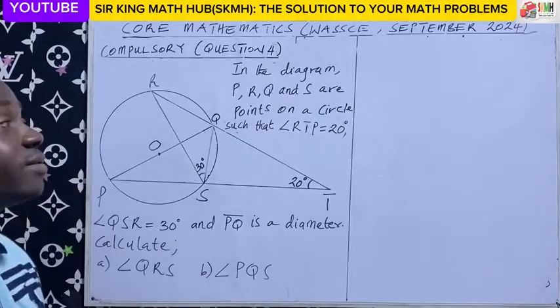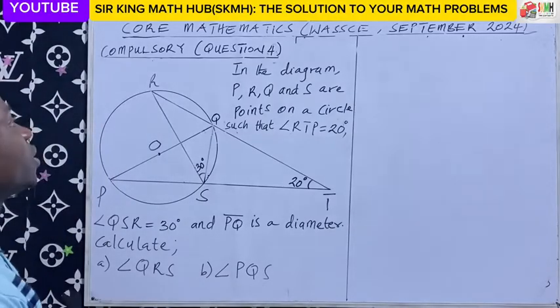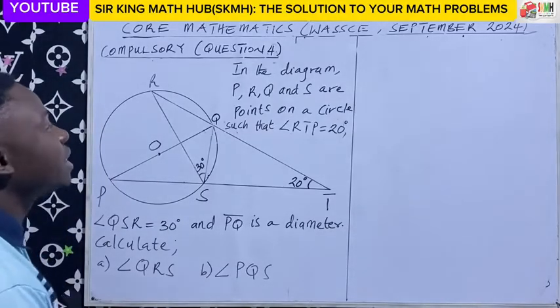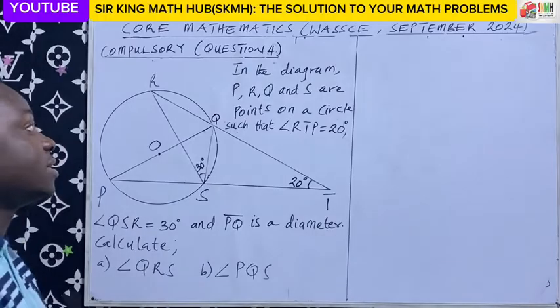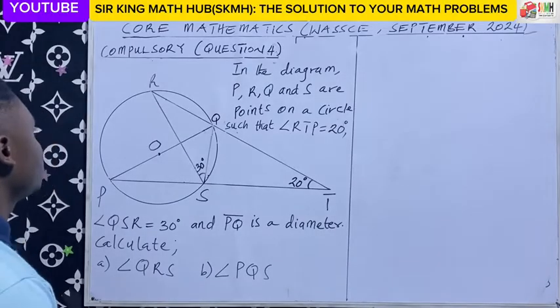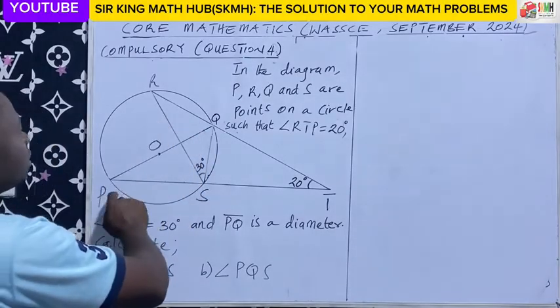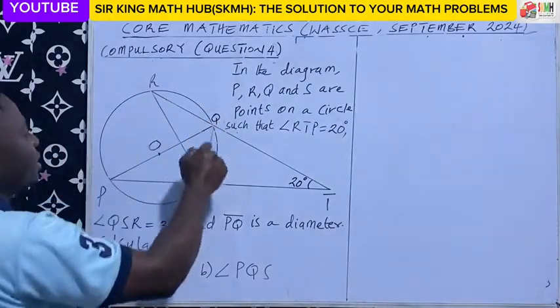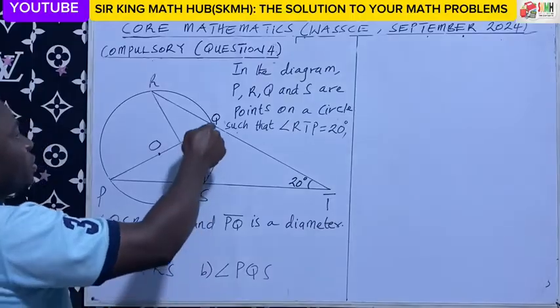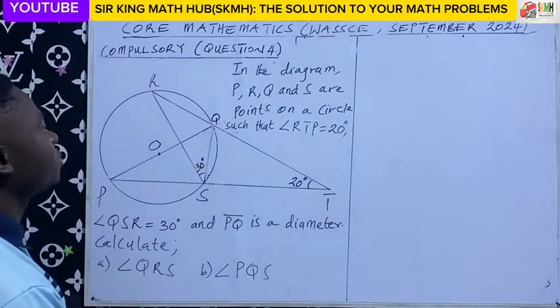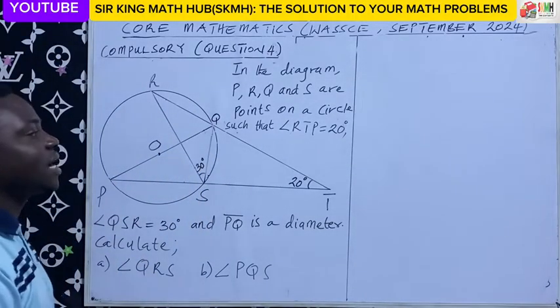Compose question 4. In the diagram, P, R, Q, S are points on the circle. Consider there are points on the circle.